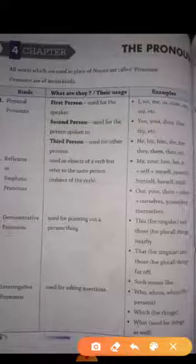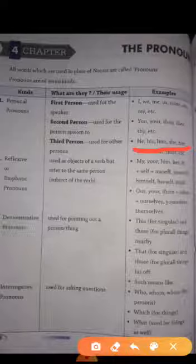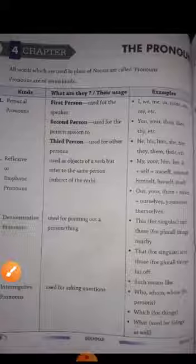Third person, jis ki baat ho rahe hai. If I am telling you about take a person as Ram. Aap socho ki mein Ram ki baat kar rahe hou. Toh Ram is the third person. Toh Ram ki context me aam pronoun kaise use karenge. He, his, him, she, her, they, them, their.